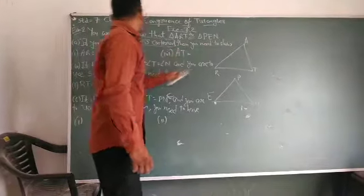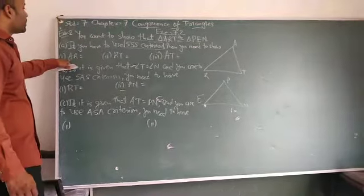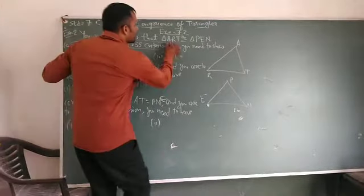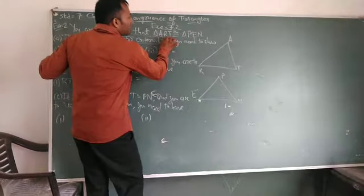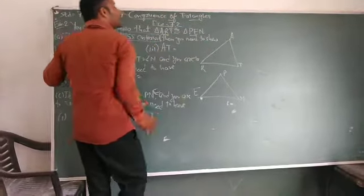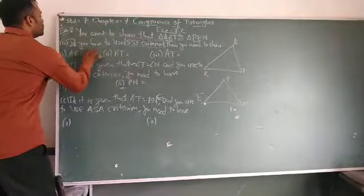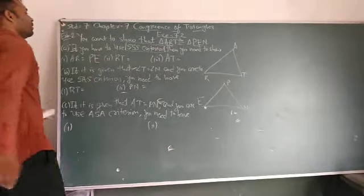Then you need to show that, first, AR, the first two letters, AR is equal to first two letters PE. AR is equal to PE.